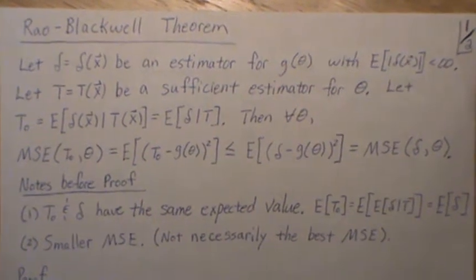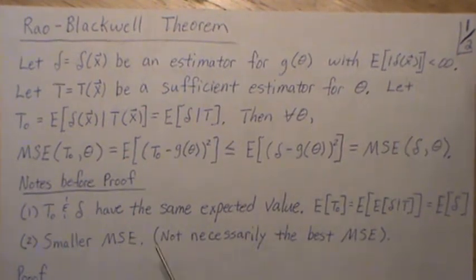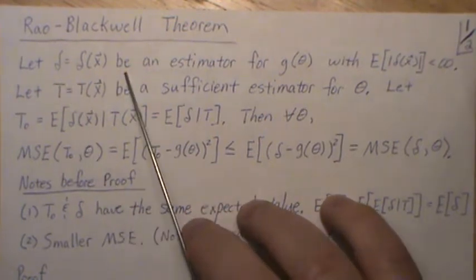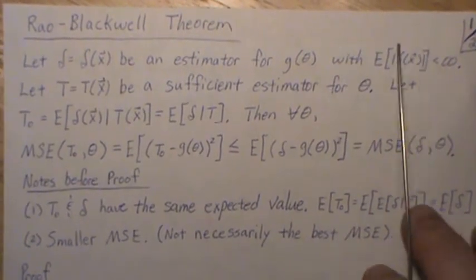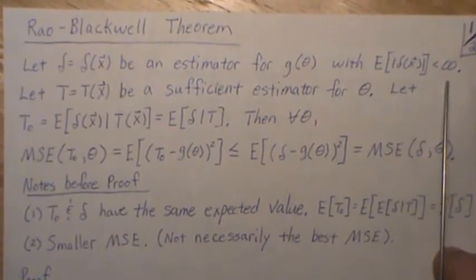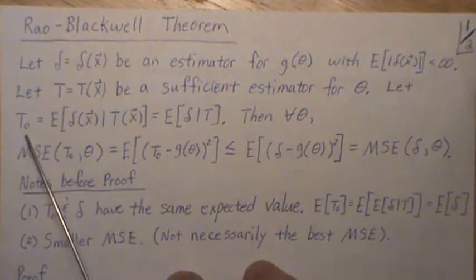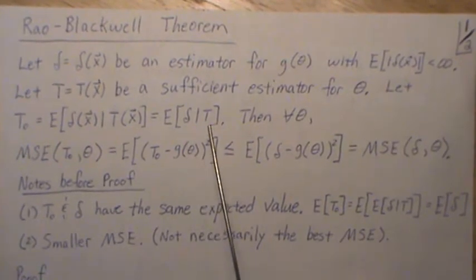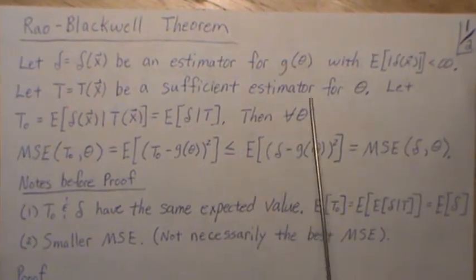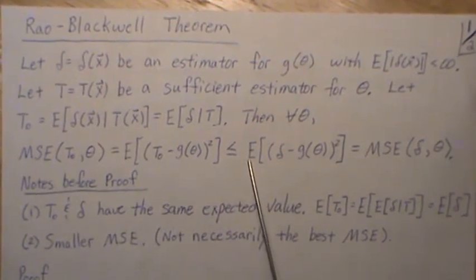This is the next video in a playlist called parameter estimation, and we're going to look at the Rao-Blackwell theorem. It's stated as follows: let delta be an estimator for some function of our unknown parameter theta, g(theta), with finite absolute expectation. Let t be a sufficient statistic for theta, and let t0 be defined as the expected value of our estimate delta given the sufficient statistic t.